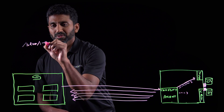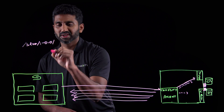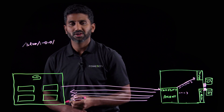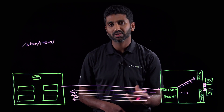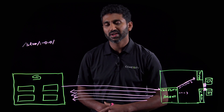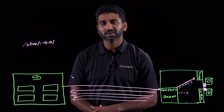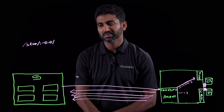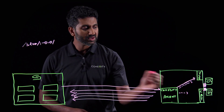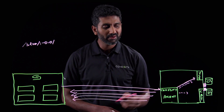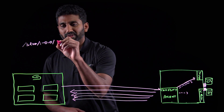Cohesity view is Cohesity's construct for representing data stores. You can check out other videos and literature to dig deeper into views. There are two volumes here — C Drive and D Drive — and each volume will get a file.